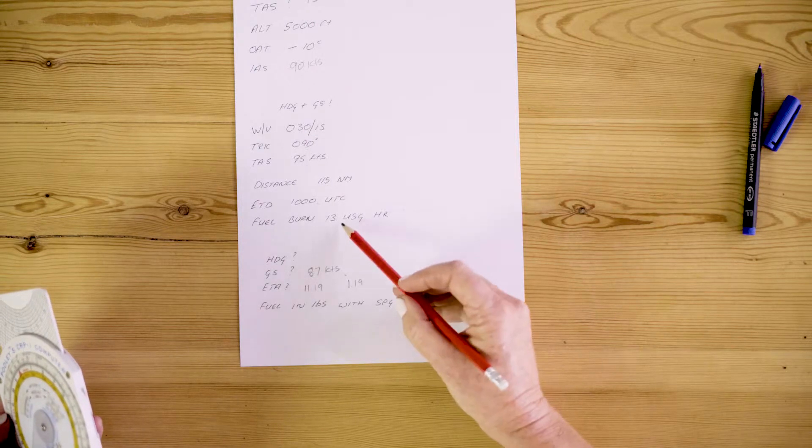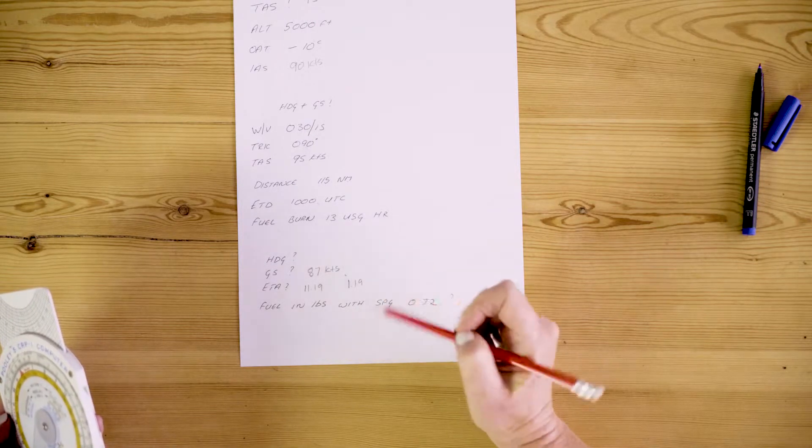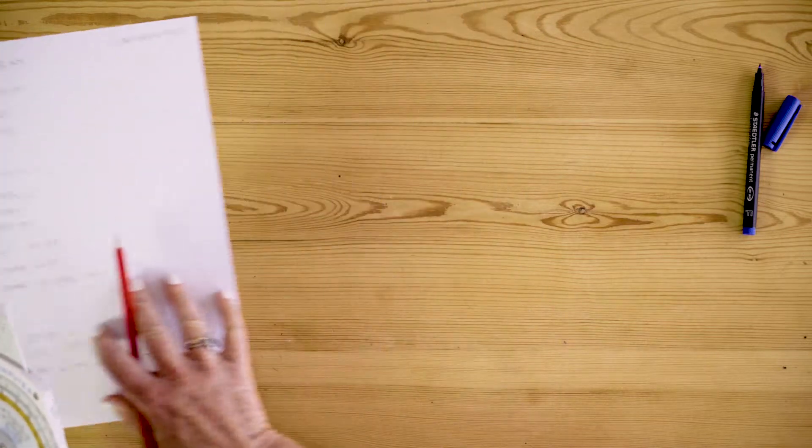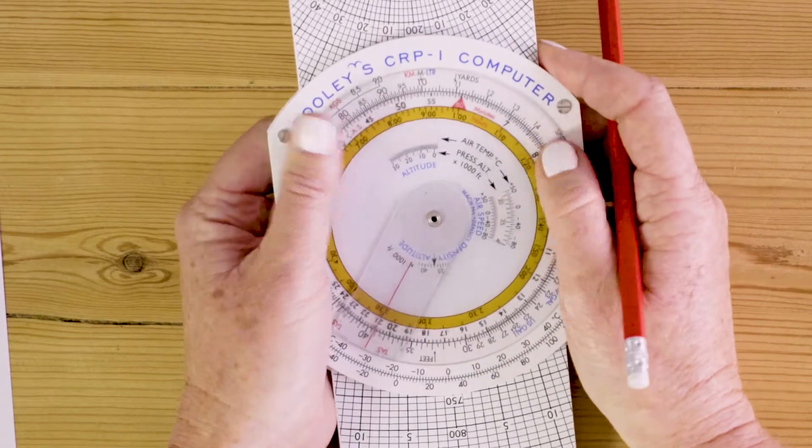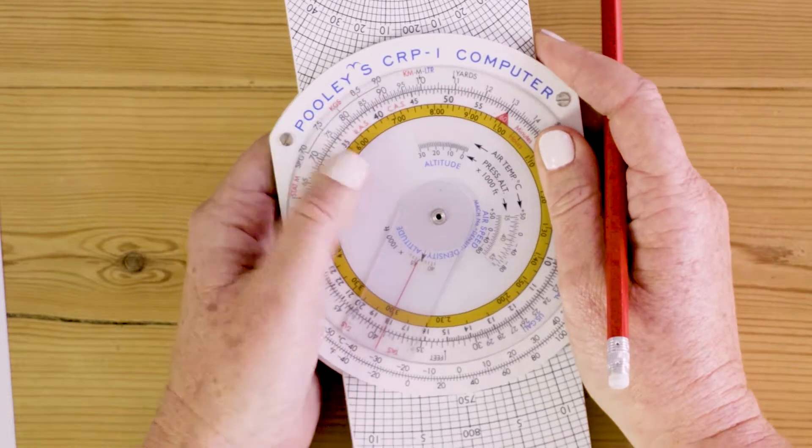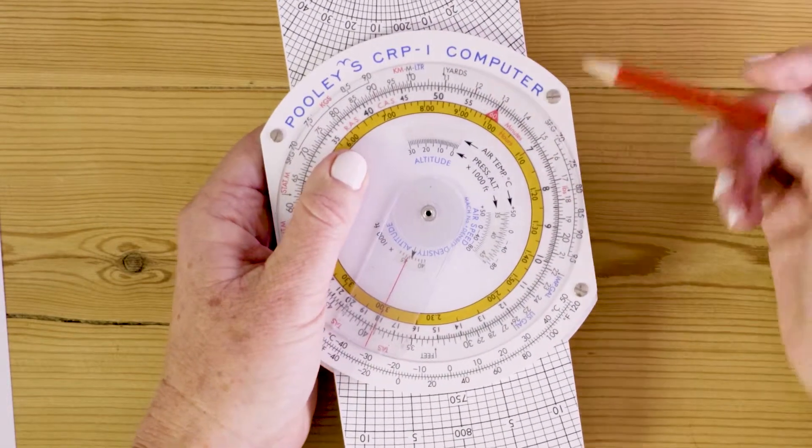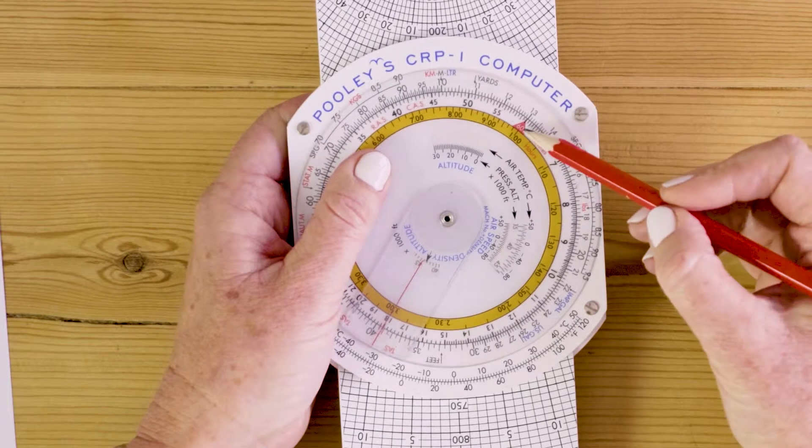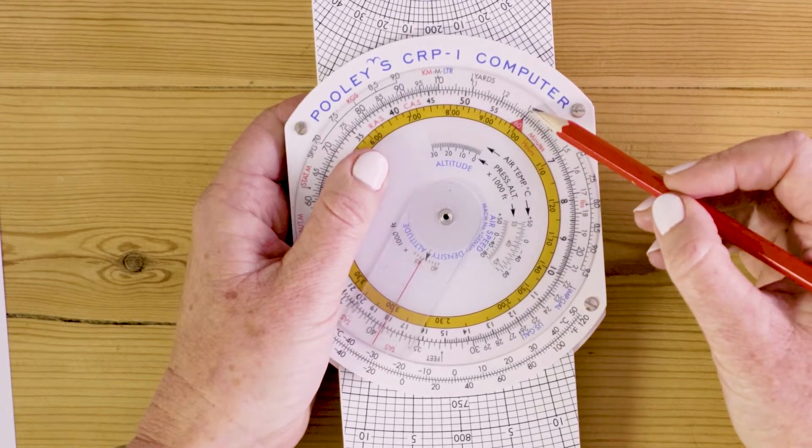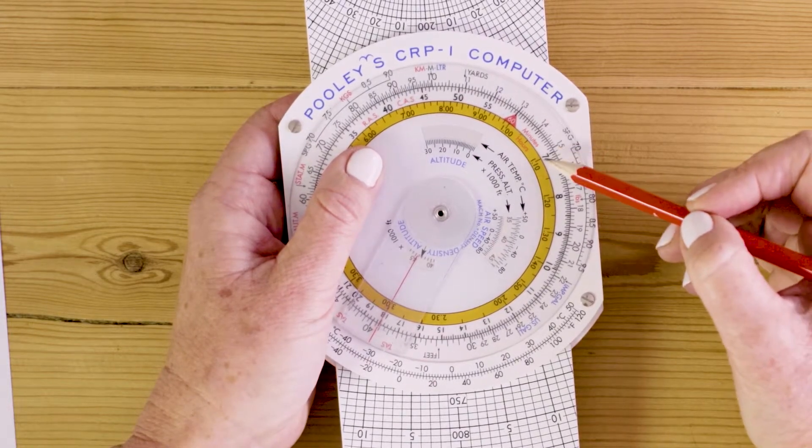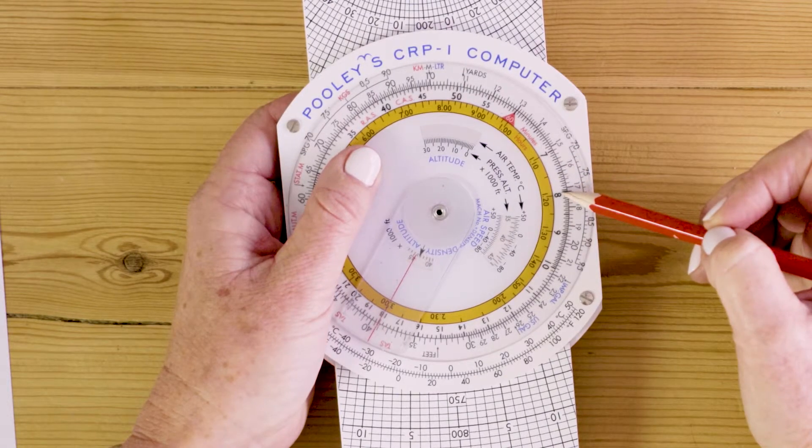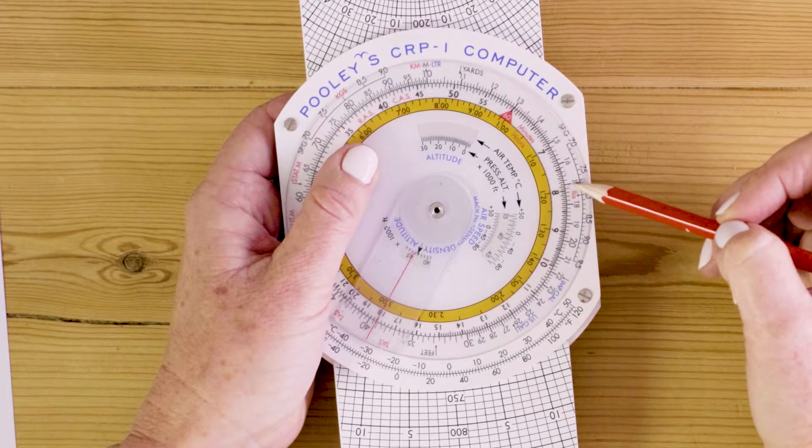If my aircraft burns 13 US gallons in one hour, how much is it going to burn in one hour and 19 minutes? Again, what do I know? You're just a detective putting the clues into the computer. I know that in one hour I burn 13. Remember these are magic numbers on the outside. I can make it anything I want it to be. I know in one hour I burn 13 gallons. In 70 minutes I'll burn just over 15 gallons. And we've got 79 minutes.